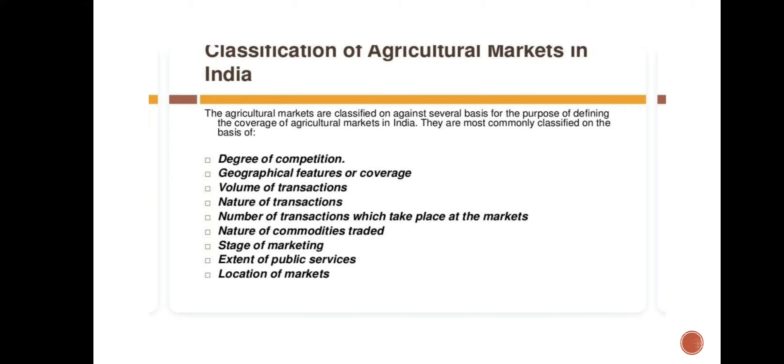Classification of agricultural markets in India: The agricultural markets are classified on several bases for the purpose of defining the coverage of agricultural markets in India. They are most commonly classified on the basis of degree of competition, geographical features or coverage, volume of transactions, nature of transactions, number of transactions which take place at the markets, nature of commodities traded, stage of marketing, extent of public services, and location of markets.